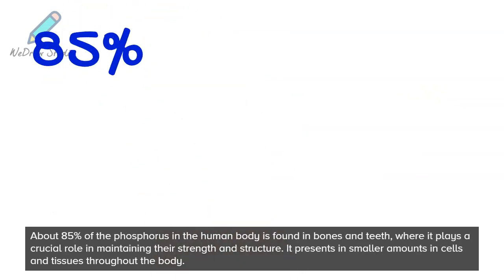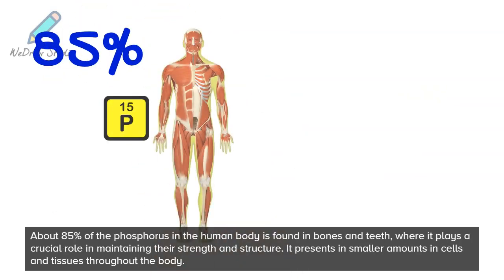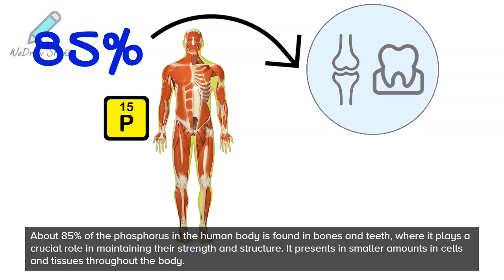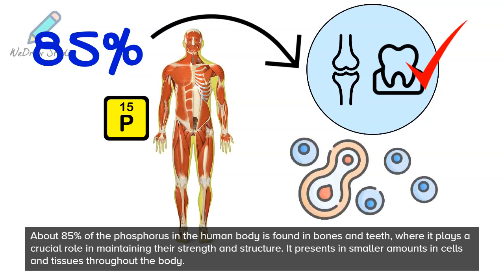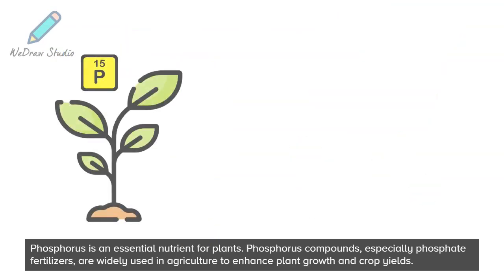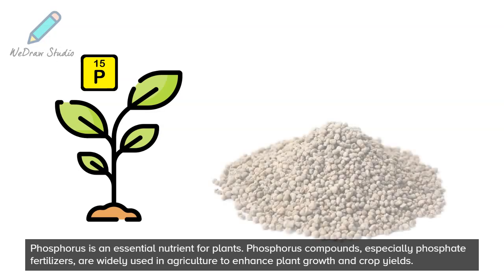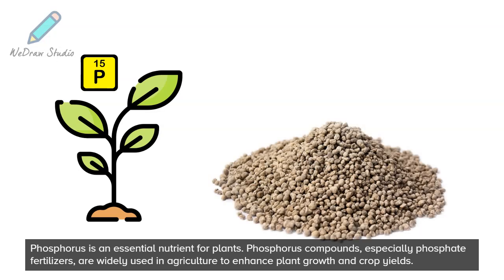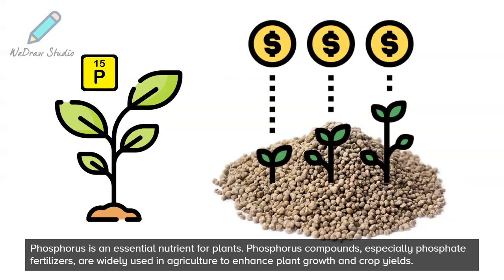About 85% of the phosphorus in the human body is found in bones and teeth, where it plays a crucial role in maintaining their strength and structure. It is present in smaller amounts in cells and tissues throughout the body. Phosphorus is an essential nutrient for plants. Phosphorus compounds, especially phosphate fertilizers, are widely used in agriculture to enhance plant growth and crop yields.